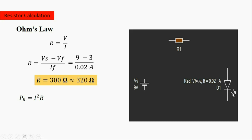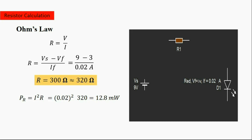Now we calculate the power rating of the resistor. The formula is: Power equals current squared multiplied by resistance. The current is 0.02 amperes and the resistance is 320 ohms. The power of the resistor equals 12.8 milliwatts. Since we have different power ratings available and the power is very small, we can use a quarter-watt resistor for our circuit.